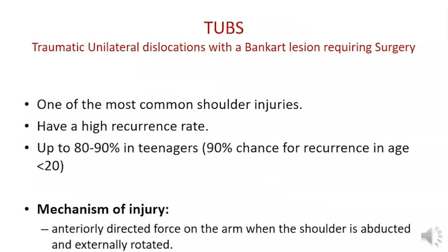Traumatic unidirectional instability is one of the most common shoulder injuries with a very high recurrence rate, up to 90% in patients under 20 years old. The mechanism of injury is an anteriorly directed force on the arm when the shoulder is in abduction and external rotation.